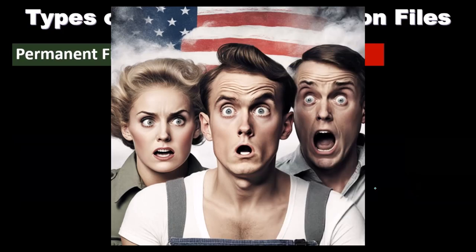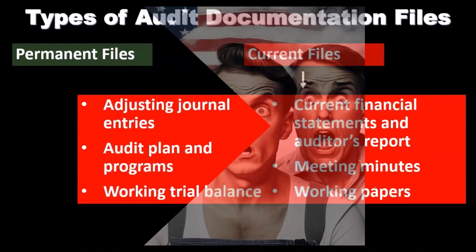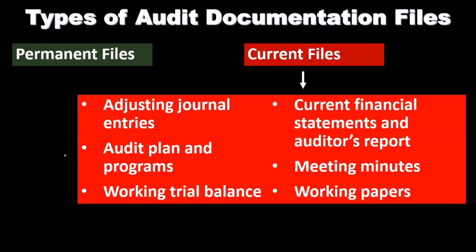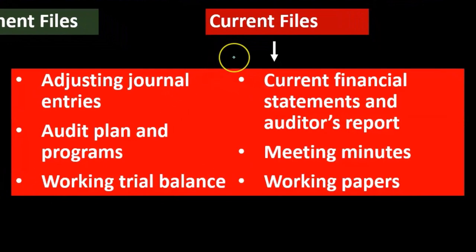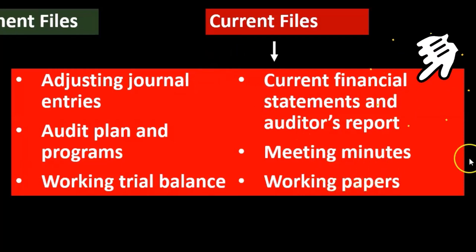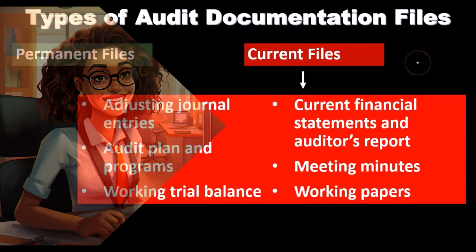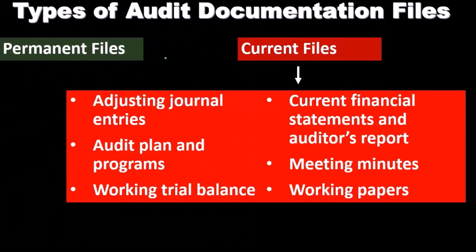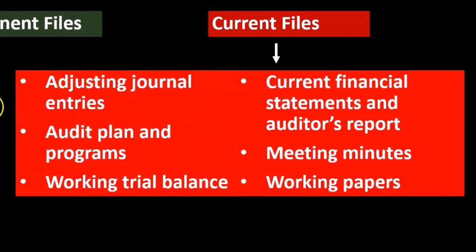When we think about the current file, we're thinking about those types of things that are going to happen in the current time period — things grouped on a yearly basis. So we have the adjusting entries, the audit plan and programs for the current audit year, the working trial balance, the current financial statements and auditor's reports, the minutes for the current time period, and the working papers. As we go through the audit, we'll typically take the format from the prior year's current file, start the current year, and jump over to the permanent file when we need long-term contract items.